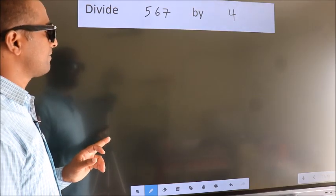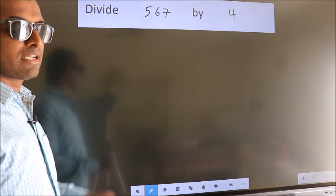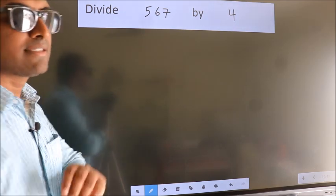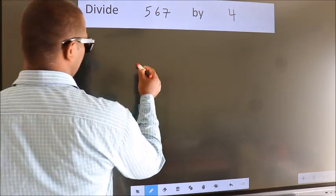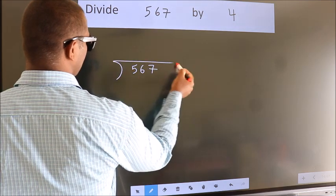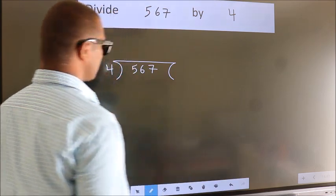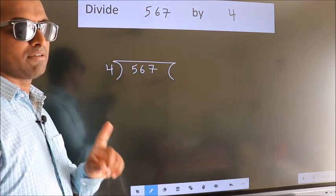Divide 567 by 4. To do this division, we should frame it in this way. 567 here, 4 here. This is your step 1.